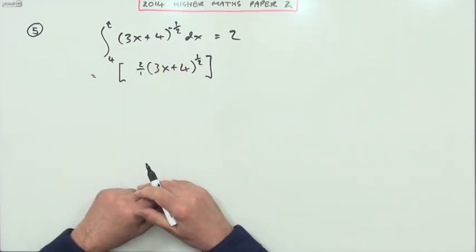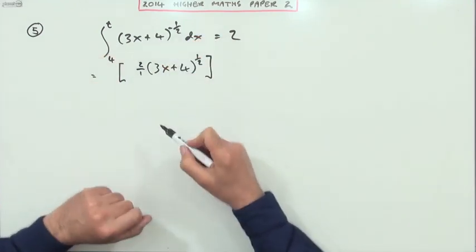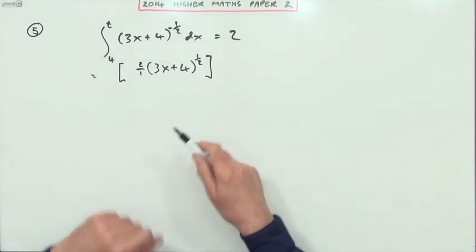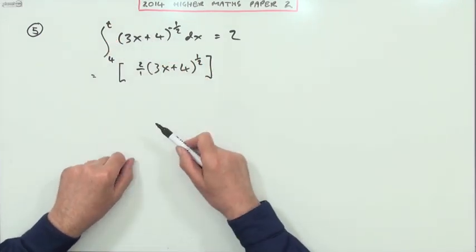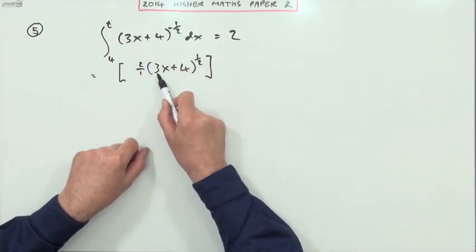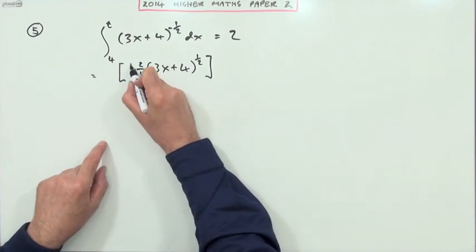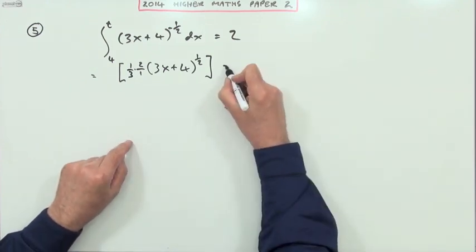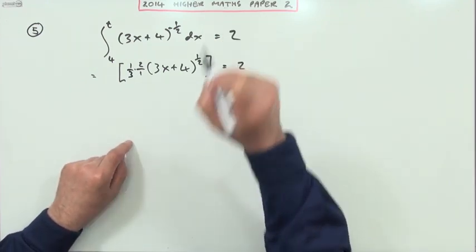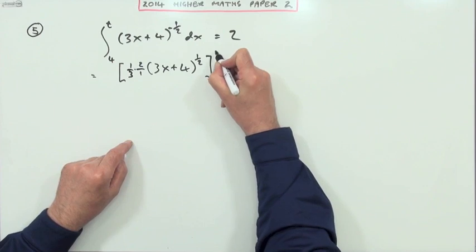by the derivative of that linear function. That derivative is 3, so dividing by 3 means it'll be 1 upon 3, a third of it. All of this should equal 2 once you've evaluated it from 4 to t. Now this two-thirds is a common factor of both calculations.